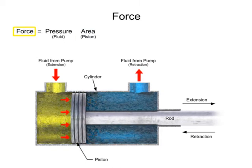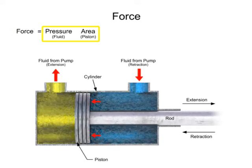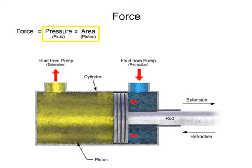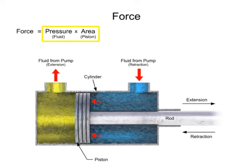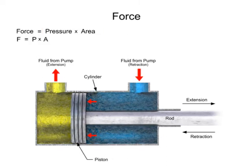The force produced by a cylinder can be found by multiplying the pressure times the area of the piston surface against which the fluid is working. This area is called the working area.